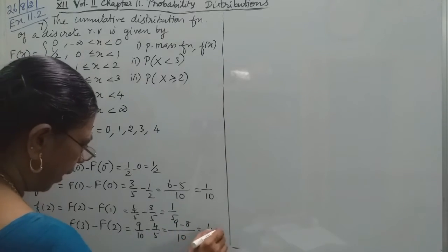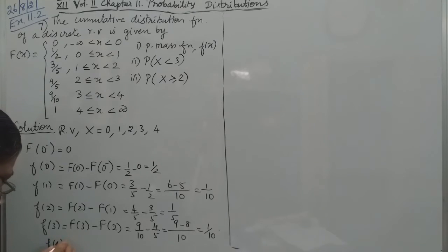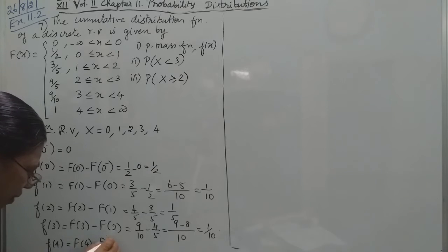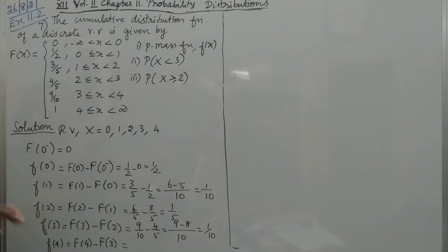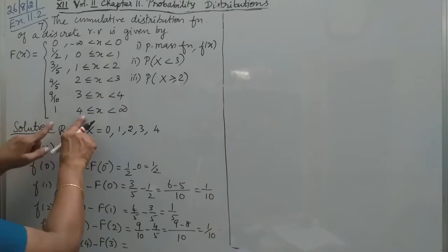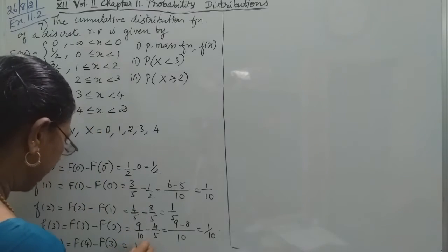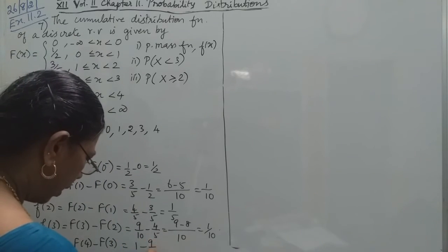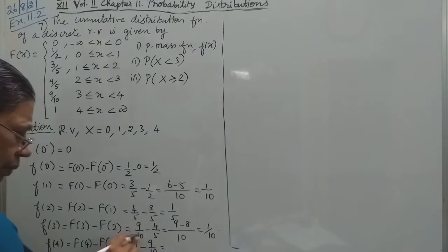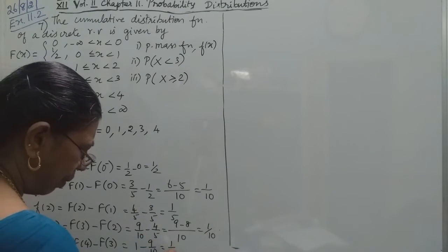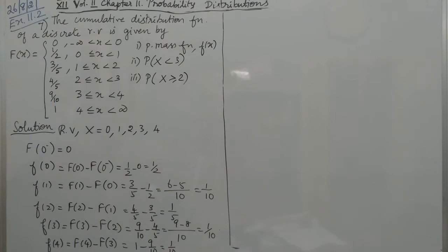The last one is small f(4). So that is capital F(4) minus capital F(3). So capital F(4), the total, is 1 minus 9/10, which is 1/10.